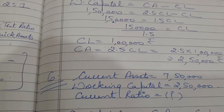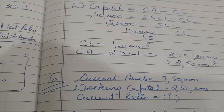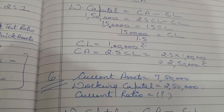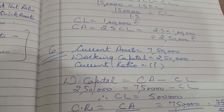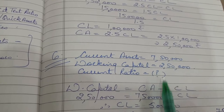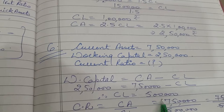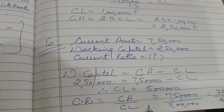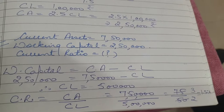Question number 6: current assets are given as Rs. 7,50,000 and working capital is given as Rs. 2,50,000. Find the current ratio. First, use the working capital formula since it is given. Working capital = current assets − current liabilities: 2,50,000 = 7,50,000 − CL, so CL = Rs. 5,00,000. Now current ratio = CA / CL = 7,50,000 / 5,00,000 = 1.5:1.